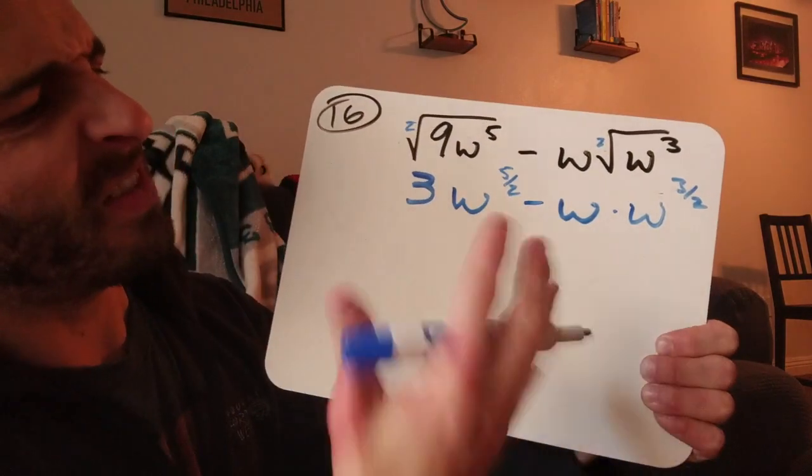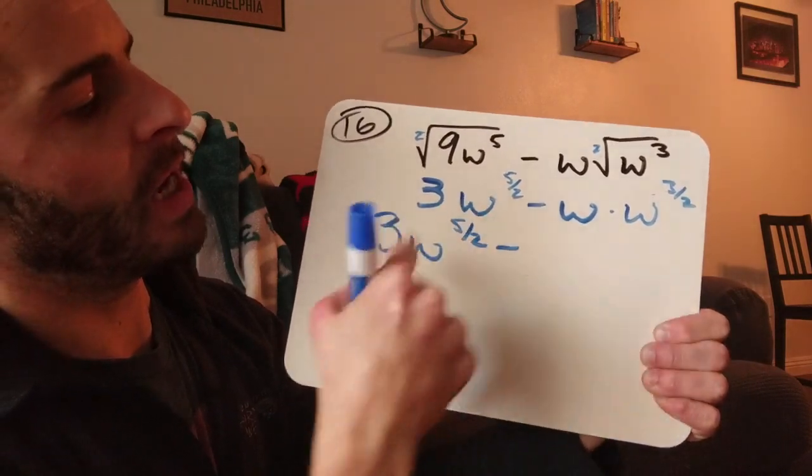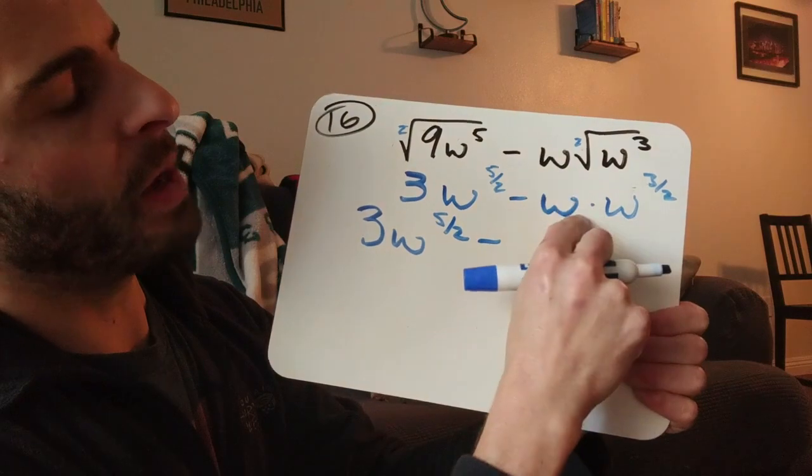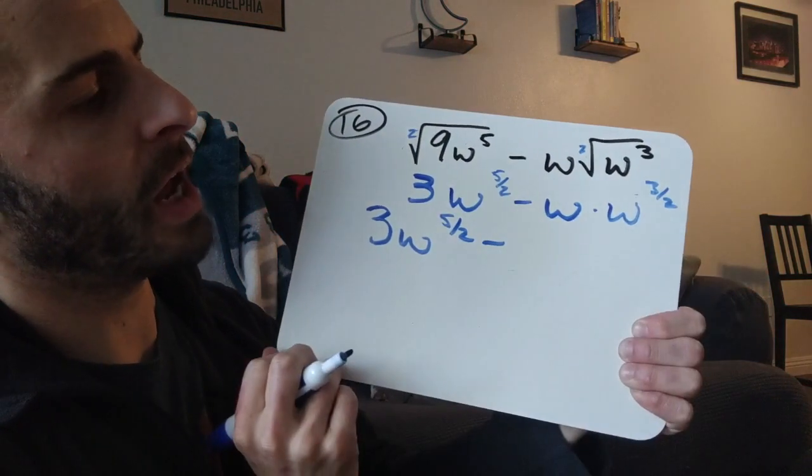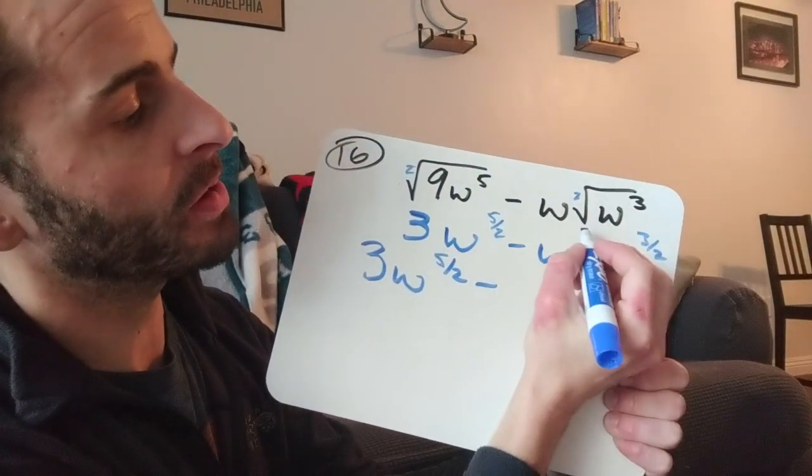Alright, now I'm going to see if I have like terms. I don't think I can do anything here, but I have a w times a w to the 3 halves. So I have the same base and I'm multiplying those bases, so I can add the exponents.